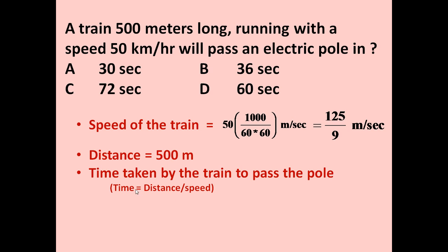So we have to determine the time taken by the train to pass the pole. Time is equal to distance upon speed. We know distance is 500 and speed is 125 upon 9. So distance is 500 and speed is 125 upon 9 seconds. This much time will be required to cross the pole.